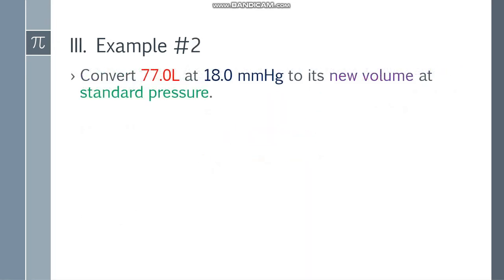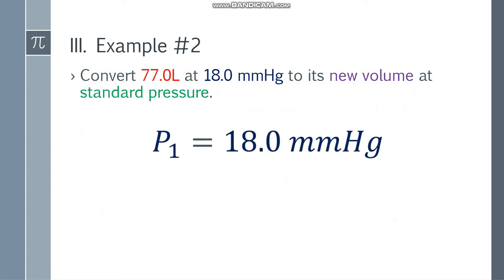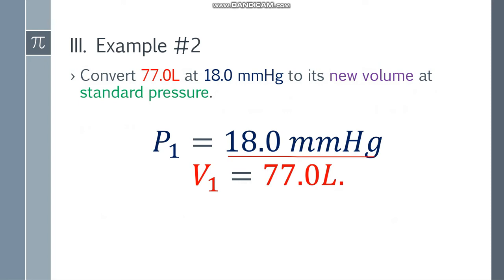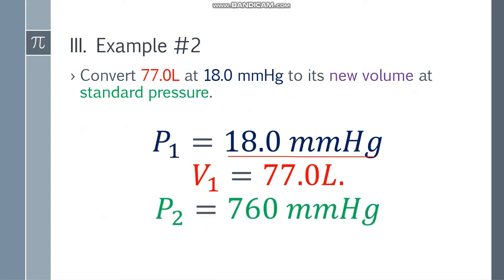Example number two. Convert 77.0 liters at 18.0 mmHg to its new volume at standard pressure. So we have initial pressure 18.0 mmHg, initial volume 77.0 liters, and resulting pressure 760 mmHg. I use mmHg instead of atm because the initial pressure is already in mmHg — it's easier to keep the same pressure units. We are asked to find the resulting volume, so I'll put x.